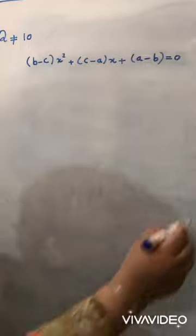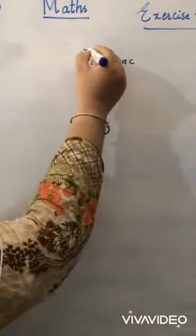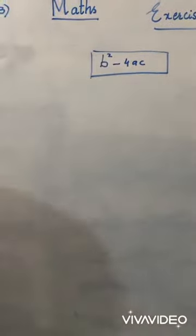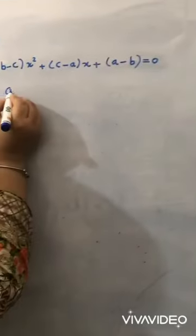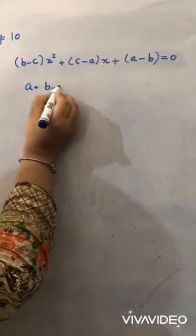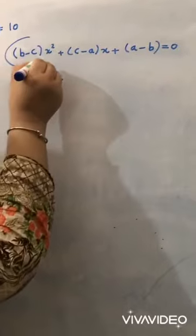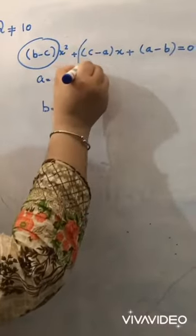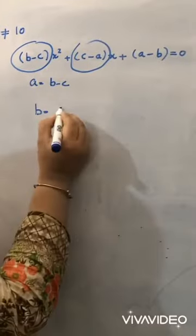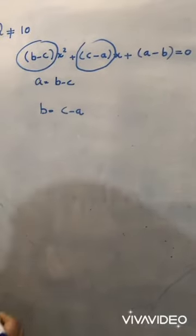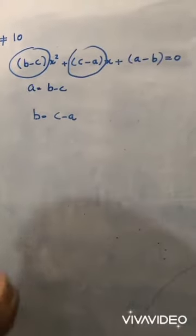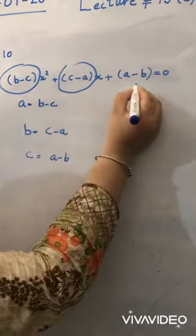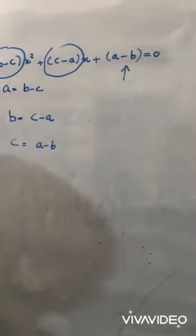We know very well that the discriminant is b² minus 4ac. Here, a is equal to b minus c, as the coefficient of x² is b minus c. b is equal to c minus a, as the coefficient of x is c minus a. c is equal to a minus b, as the constant term is a minus b.